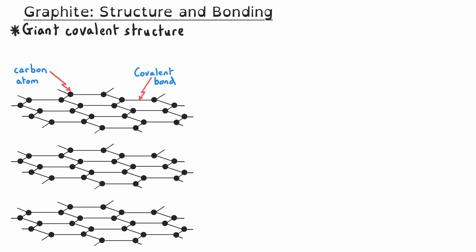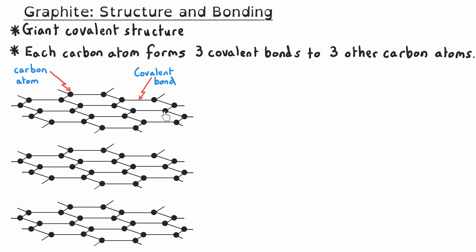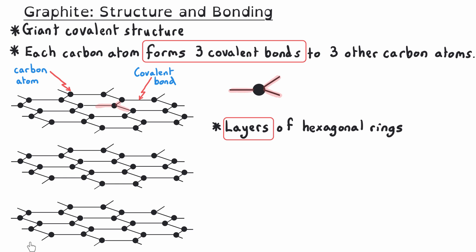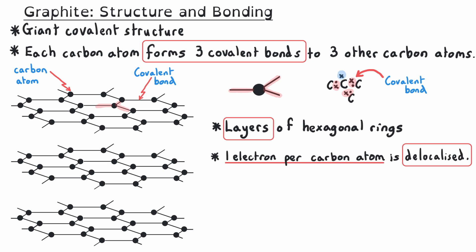Graphite is a giant covalent structure, made up of a huge number of carbon atoms in a repeating pattern. Each carbon atom, shown as a black circle in the diagram, forms three covalent bonds — shown as black lines — to three other carbon atoms, resulting in layers of hexagonal rings. Carbon has four electrons in its outer shell but only uses three of them to form covalent bonds. As a result, one electron per carbon atom is delocalized, meaning it isn't in a fixed position and can move through the structure, similar to electrons in metals.